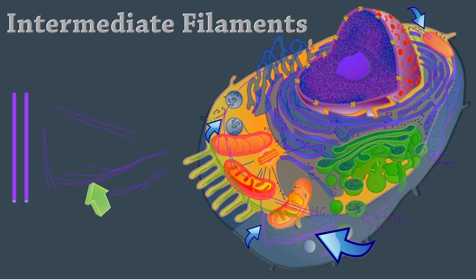Intermediate filaments are protein fibers whose composition varies. These stable cytoskeletal elements resist mechanical forces acting on the cell.